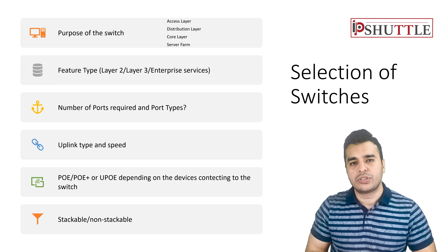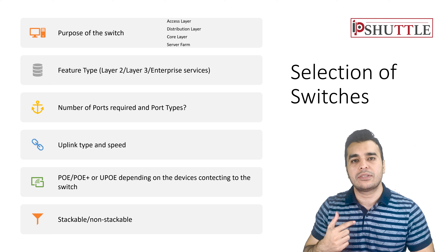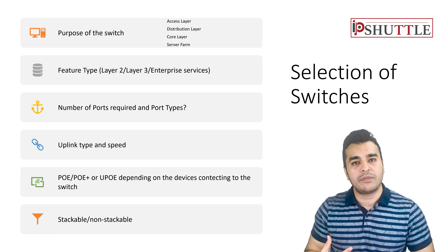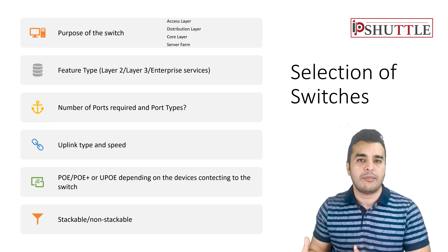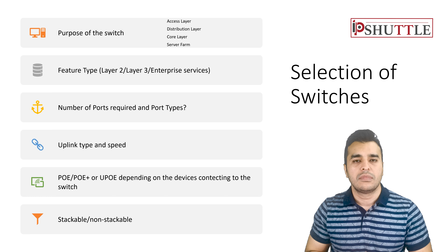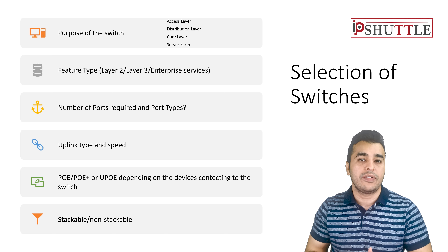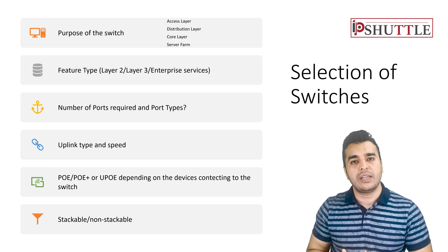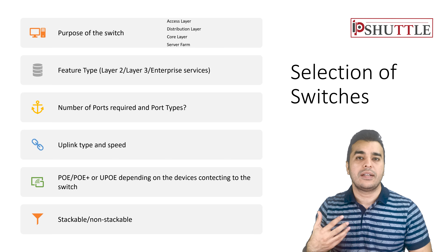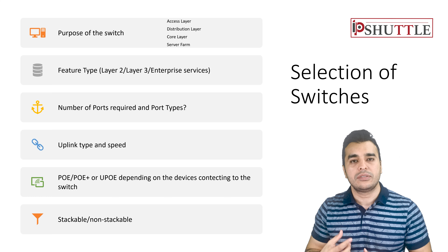Third, how many ports do you need and how many devices will connect? Fourth, what kind of uplinks are required — SFP-based, copper-based — and what speed: 10 gig, 40 gig, or 100 gig? Fifth, will any PoE-based devices connect, such as CCTV cameras, IP phones, or access points? IP phones typically need PoE, but some require PoE Plus. CCTV and access points may need UPoE, and newer building devices may require UPoE Plus, which delivers up to 90 watts. This power calculation is important before selecting the switch.